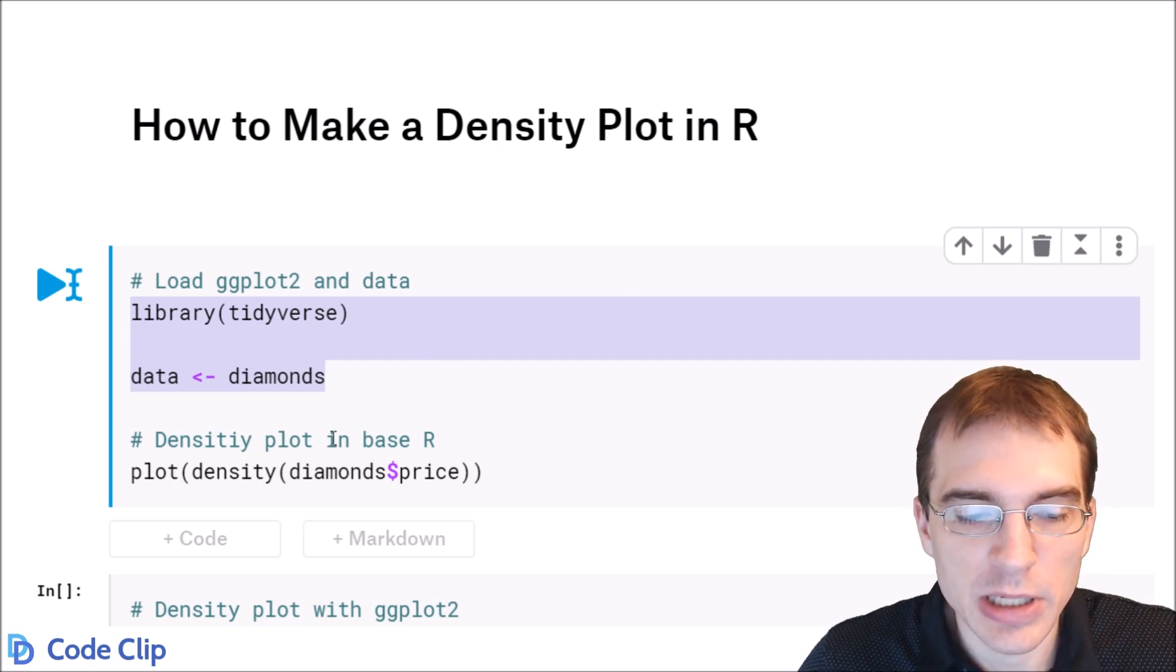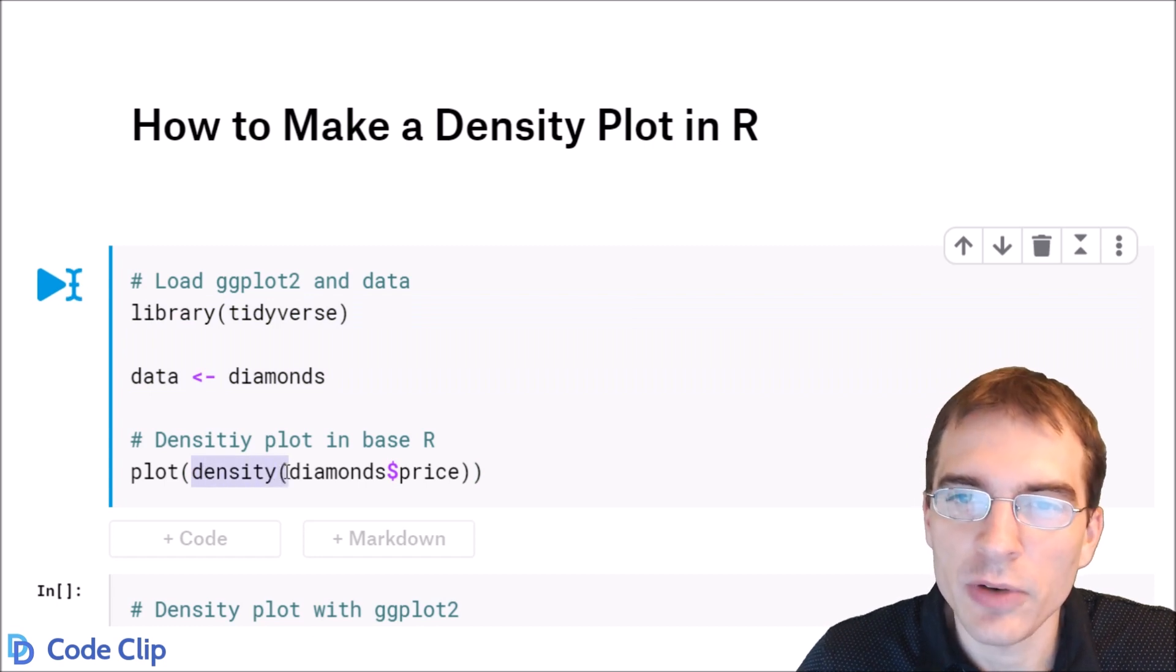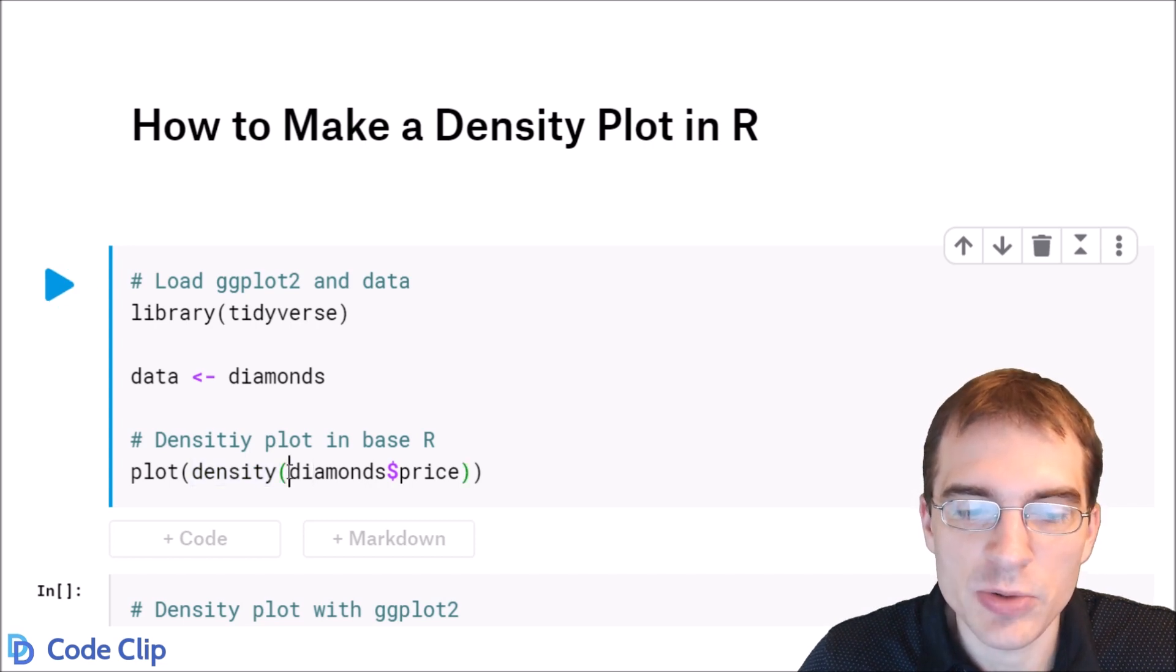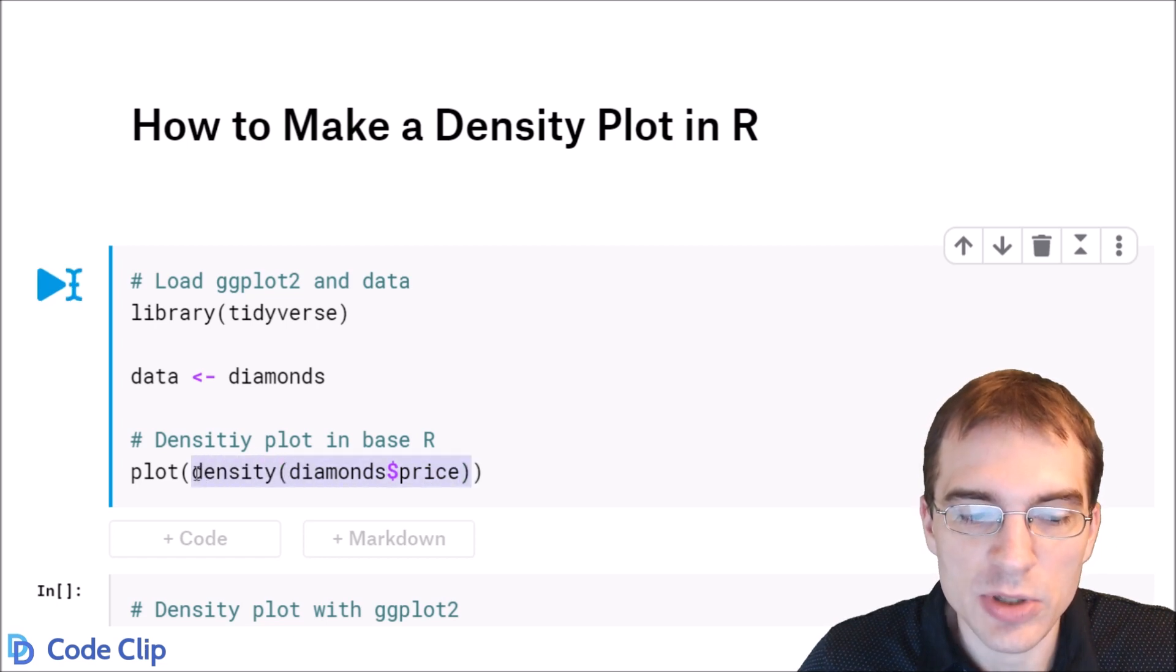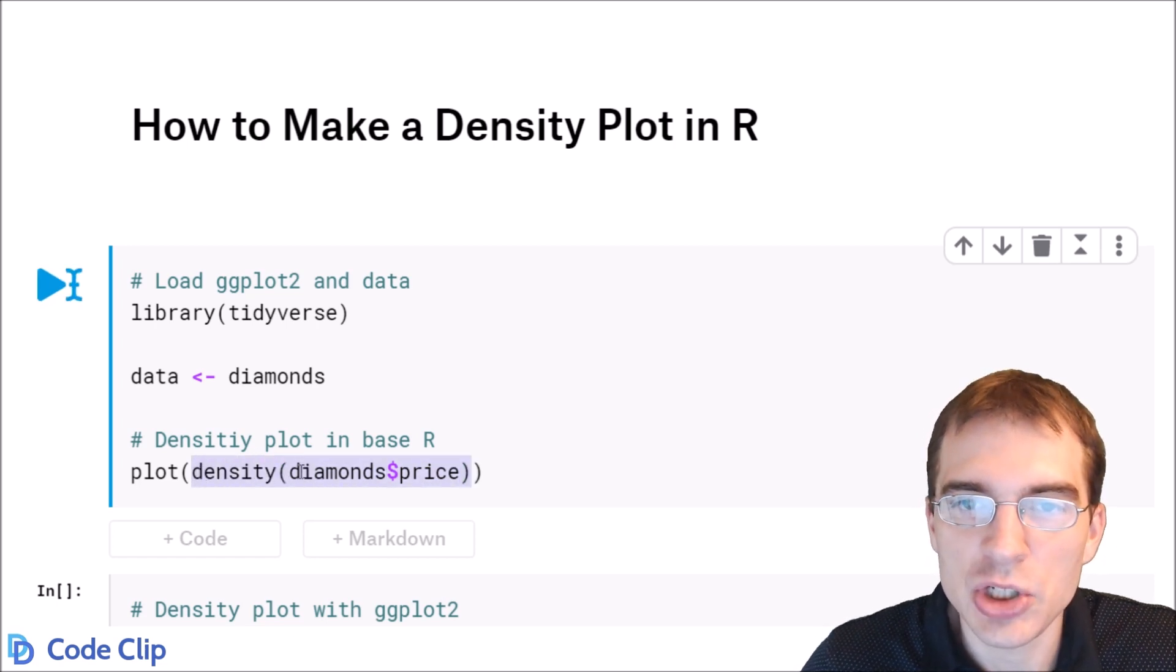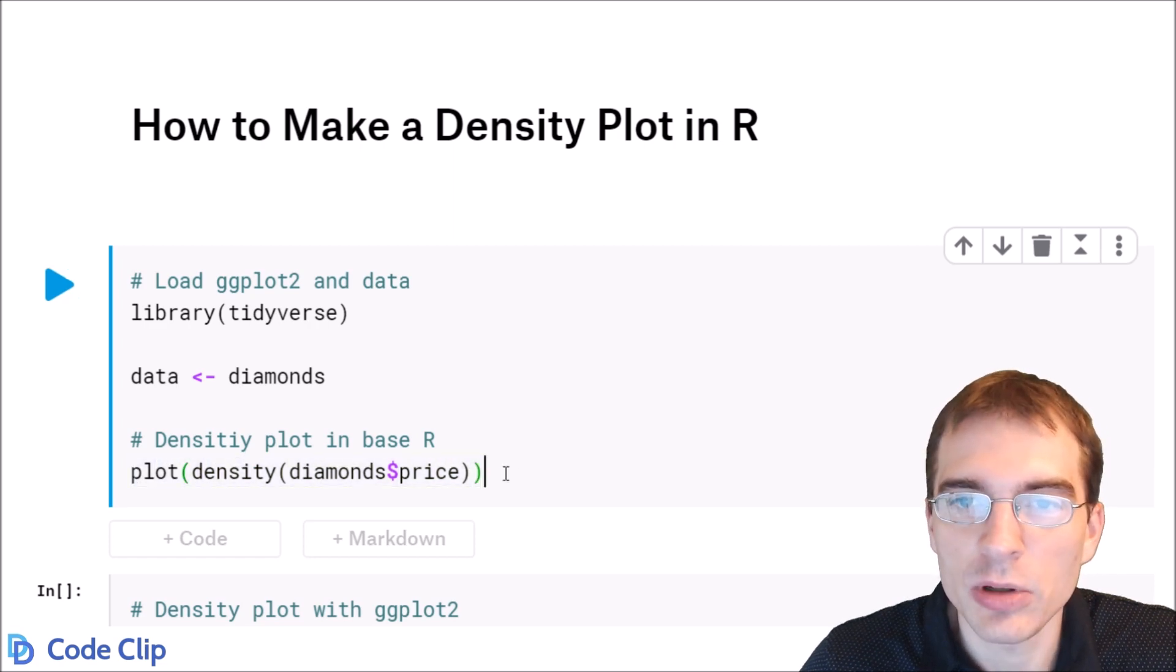To do the density plot in base R, you run this density function on whatever column you want to make the density plot for. You just pass in a numeric column for that. In this case, we're going to do the price column of the diamonds dataset, and then you take the result of this density function and pass it to the base R plot function, and that will make a density plot.